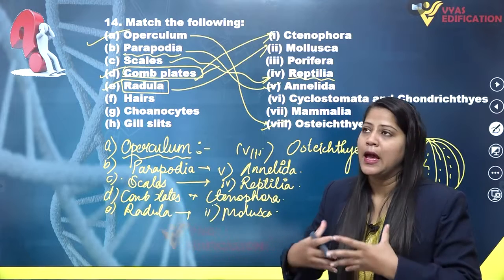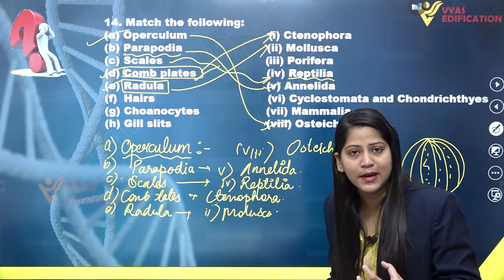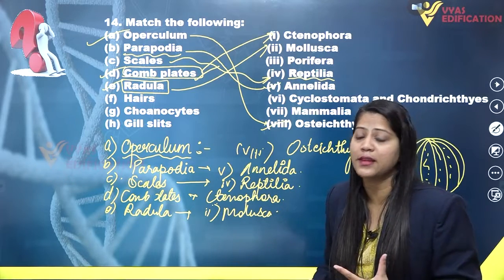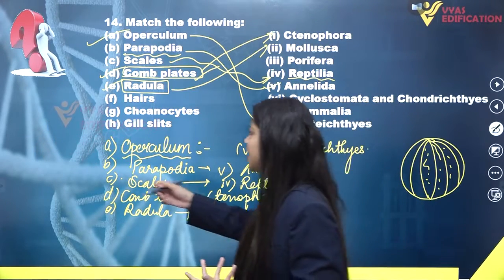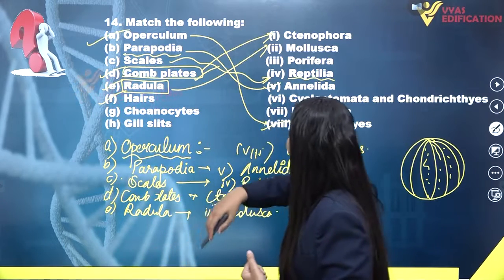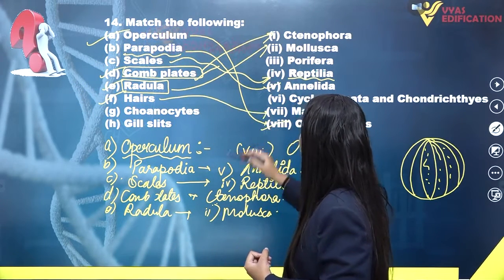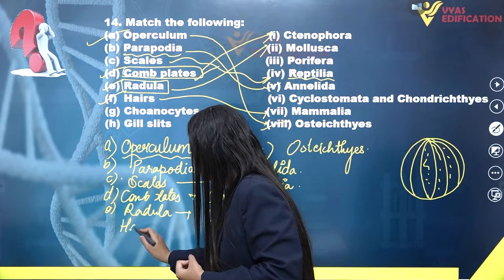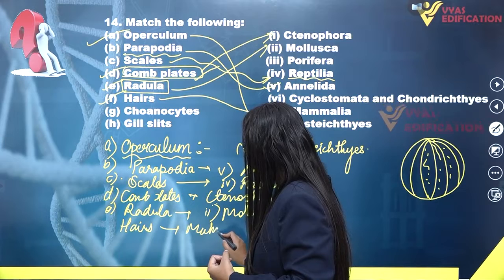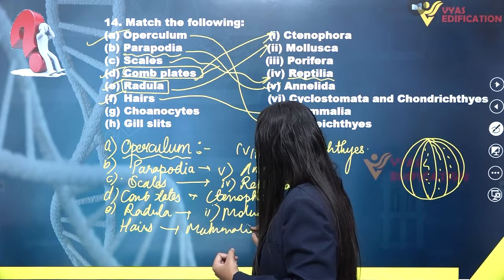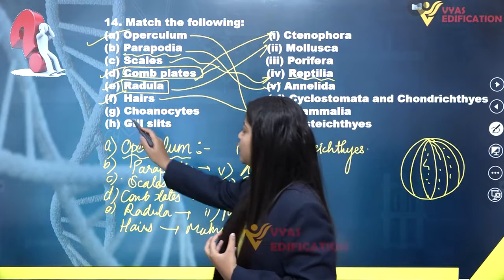Hairs are found on the skin of mammals. We are mammals, and all mammals included in the animal kingdom have hairs on their head as well as on their skin. Our skin and head are covered with fine hairs, and this hair is the characteristic feature of Mammalia. So hairs will match with Mammalia.